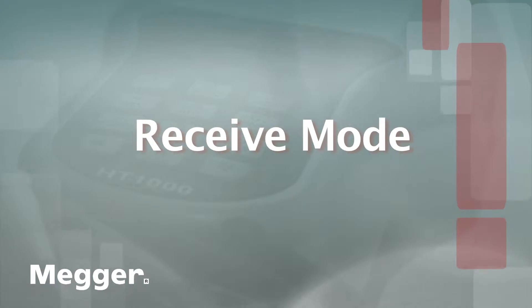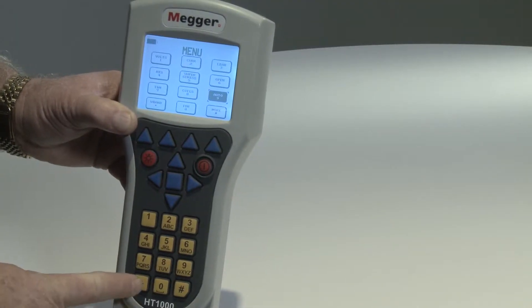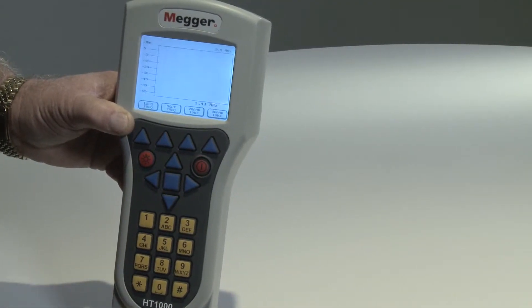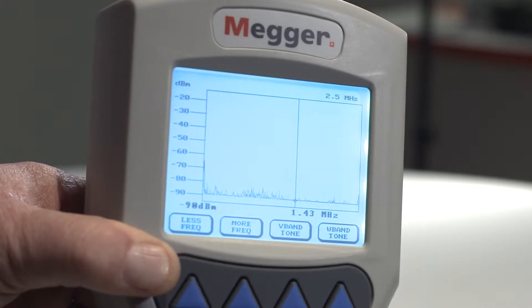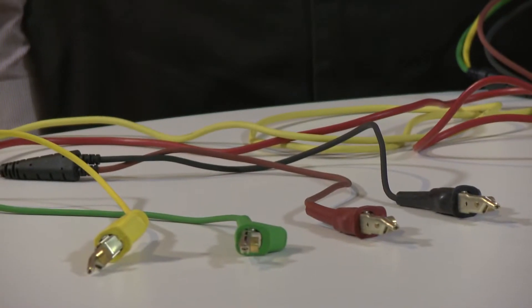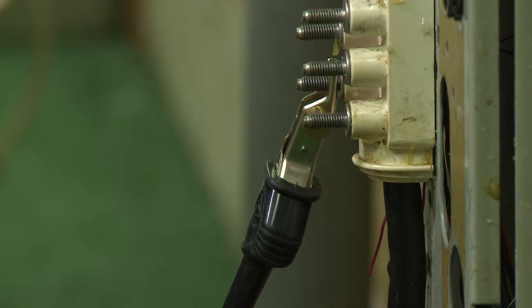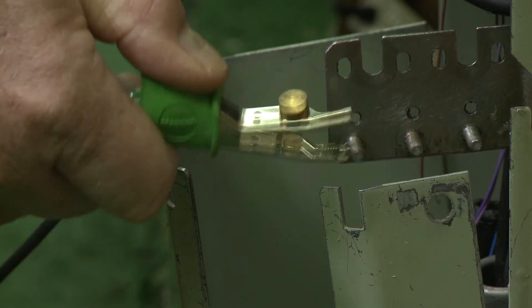Receive mode. As we said, when Wideband Spectrum Analyzer is selected from the main menu, the unit defaults to receive mode. Connect the test leads black to tip, red to ring, and green to ground.